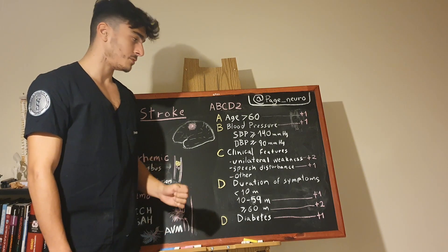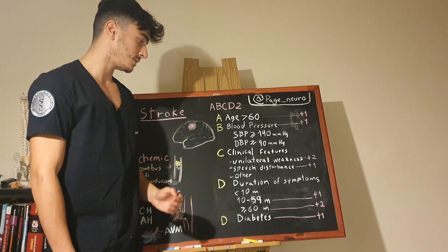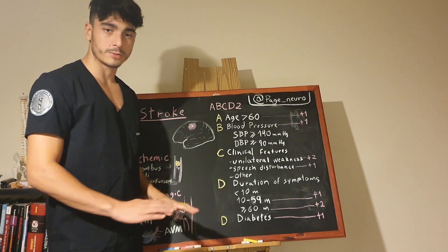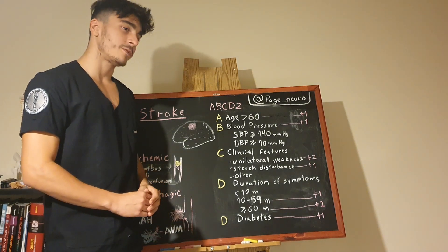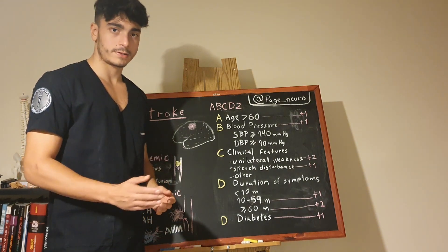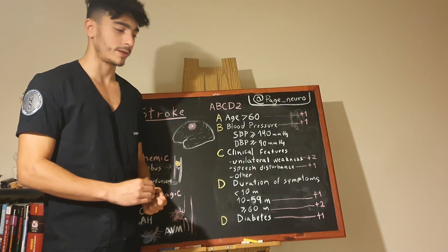And the D, the duration of the symptoms. Less than 10 minutes, wouldn't punctuate. 10 to 59 minutes, one point. And more than 60 minutes, two points.